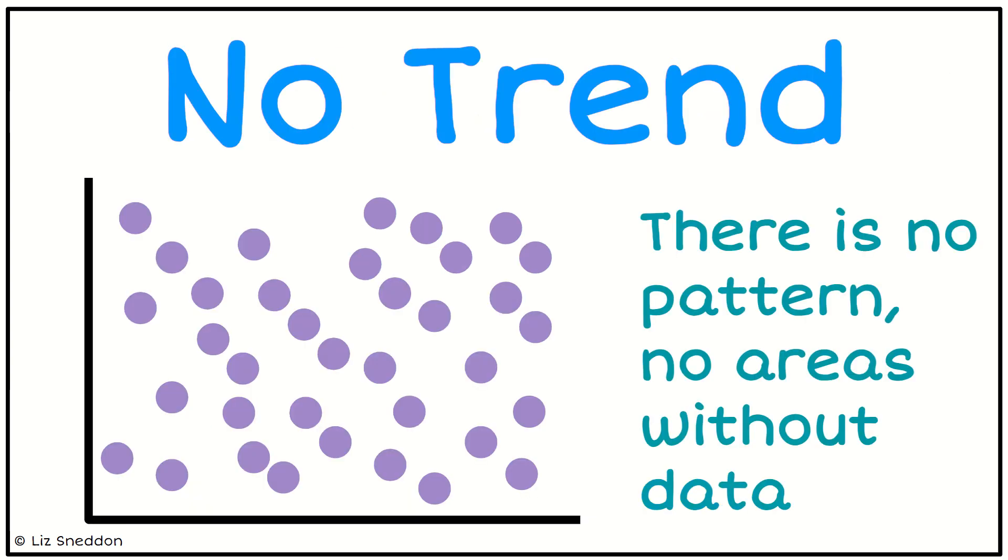So if we have a pattern like this and you can see the dots are just randomly scattered throughout, this is an area where we've got no trend at all. There's no pattern, there's no increasing, decreasing, changing pattern. There's just completely nothing going on.